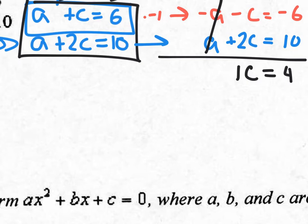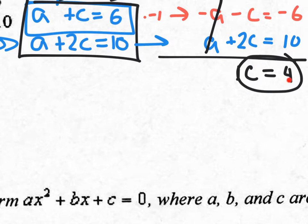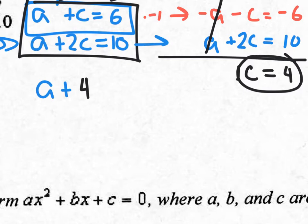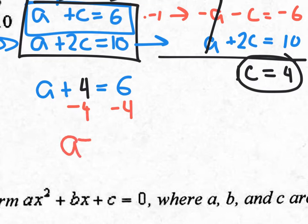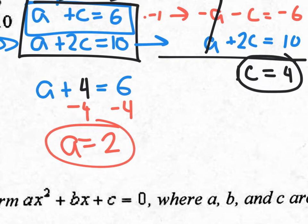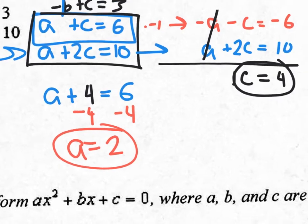C equals 4 is an answer. Now I'm treating this as a 2 by 2 system. I plug C equals 4 into the equation A plus C equals 6, giving A plus 4 equals 6. Subtracting 4 from both sides, A equals 2. So now I have two answers: A equals 2 and C equals 4. All I need to do is find B.